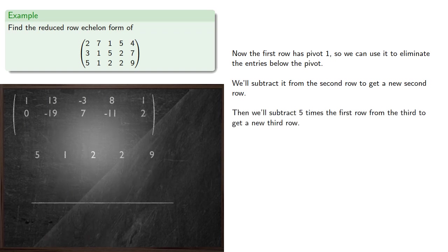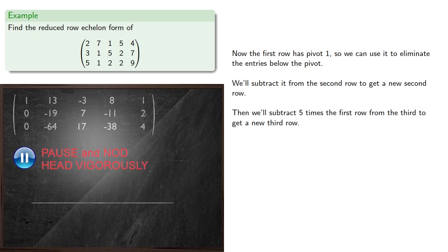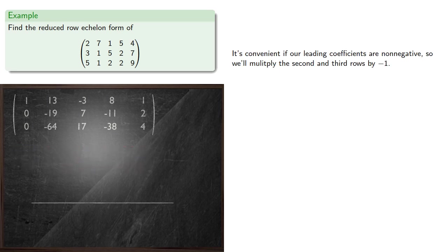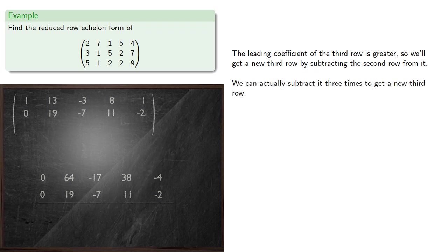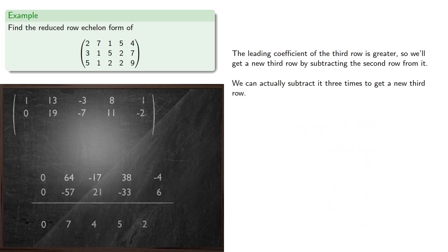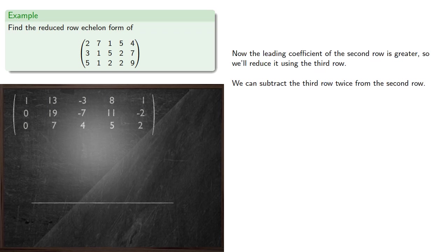We'll subtract 5 times the first row from the third to get a new third row. Now it's convenient if our leading coefficients are non-negative, so we'll multiply the second and third rows by negative 1. The leading coefficient of the third row is greater, so we'll get a new third row by subtracting the second row from it — we can actually subtract it three times to get a new third row. Now the leading coefficient of the second row is greater, so we'll reduce it using the third row. We can subtract the third row twice from the second row.